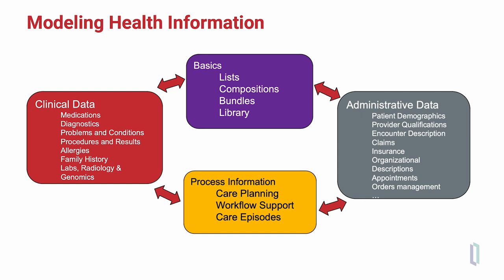The category of clinical data is what we usually think of as data exchanged between systems. These include FHIR medication, diagnostics, problem and condition resources, procedures and results, allergies, family history, lab observations, radiology, and genomic observations. Complementing these are administrative data resources that allow representation of patient demographics, provider qualifications, descriptions of encounters, payment concepts like claims and insurance coverage, organizational identities, and appointments.